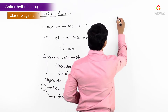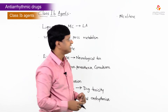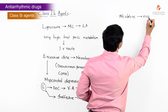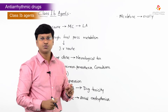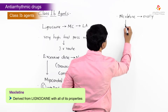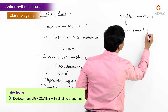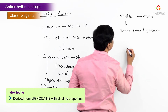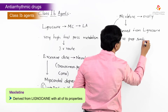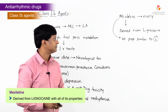Apart from lignocaine, another important Class 1b drug is mexiletine. Mexiletine is an orally active lignocaine derivative with all the properties of lignocaine. It is derived from lignocaine and has all properties similar to that of lignocaine.